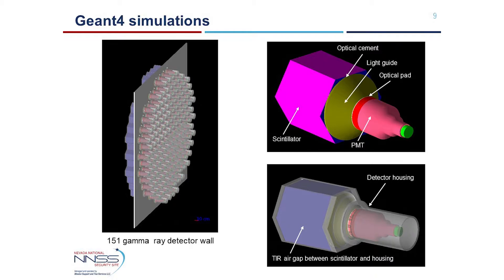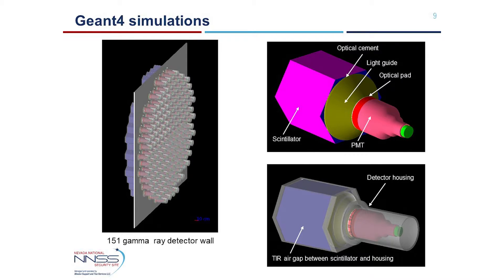This shows the scintillator, the light guide, the photomultiplier, as well as the optical couplings between them. The bottom right figure shows the current detector design with the aluminum housing. Finally, the figure on the left is the 151-detector wall with the main support plate.